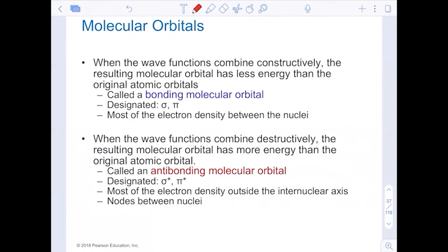When wave functions combine destructively, the resulting molecular orbital has higher energy than the original atom. That's not good. We call these anti-bonding molecular orbitals. They're designated as sigma star or pi star and most of these electrons are then outside of the internuclear axis. There's nodes between the nuclei. Why we have to account for these is so that we can truly understand why some atoms form molecules and why some other atoms do not form molecules.